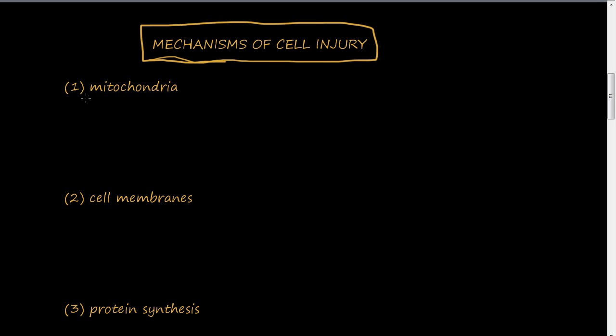The first way that cells can become injured is through mitochondria damage. Let me review what we're going to talk about so you can know the five ways, main ways in which cells can become damaged.